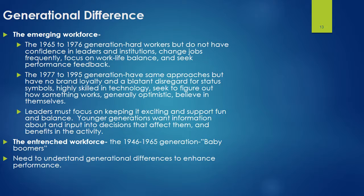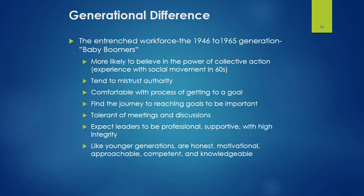Younger generations want information about and input into decisions that affect them and benefits in the activity. The entrenched workforce, also called baby boomers, are the 1946 to 1965 generations. We need to understand generational differences to enhance performance. Baby boomers are more likely to believe in the power of collective action because of their experience with the social movements in the 1960s. They tend to mistrust authority, are comfortable with the process of getting to a goal, and find the journey to reaching goals to be important. They are tolerant of meetings and discussions, and they expect leaders to be professional, supportive, and have high integrity — honest, motivational, approachable, competent, and knowledgeable.